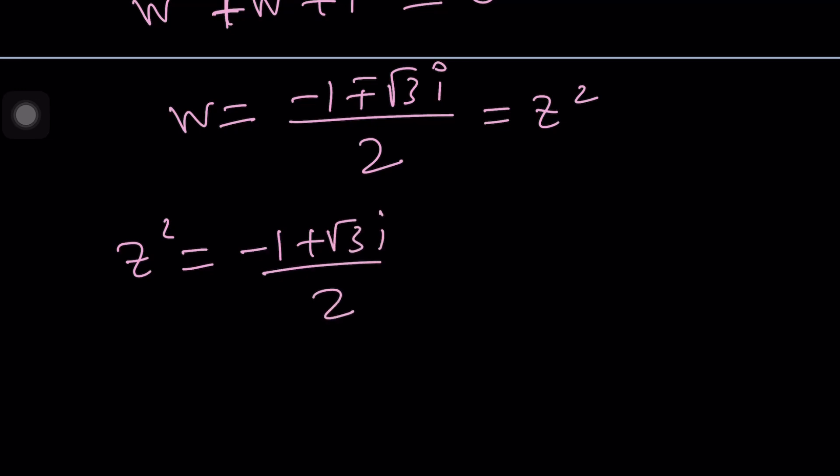Now you can do this in two different ways. Again, you can kind of set this equal to A plus B I like Z equal to A plus B I and squared, expand this, and then set the real parts and set the imaginary parts, solve a system of equations. You don't really need to. This is a really, really special equation.